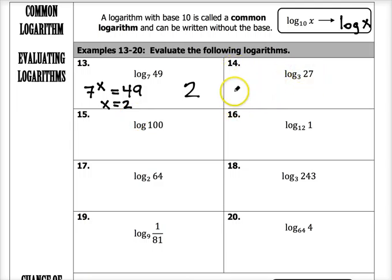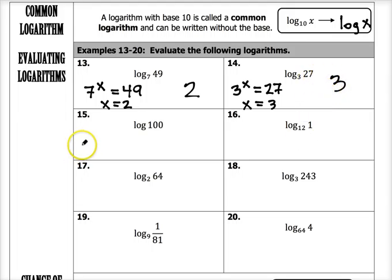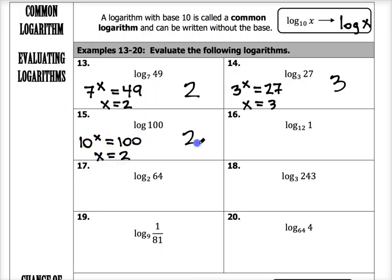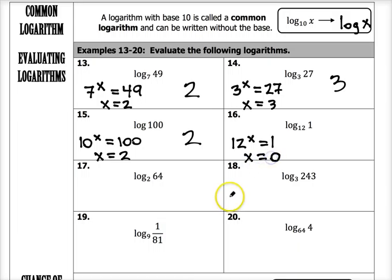Number 14: log base 3 of 27 — think 3 to what power equals 27. We know 3 cubed is 27, so log base 3 of 27 equals 3. Number 15: log of 100, which means base 10 — 10 to what power equals 100? Ten squared is 100, so the answer is 2. Number 16: log base 12 of 1 — 12 to what power equals 1? Anything to the zero power gives you 1, so the answer is 0.